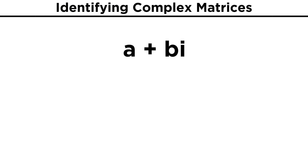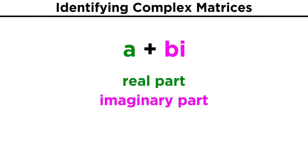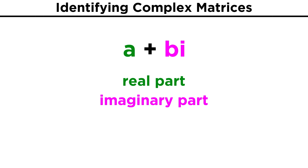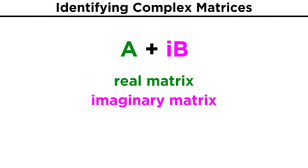We can simply recall that complex numbers are numbers with a real part A and an imaginary part BI, where I is the square root of negative one. Just the way we can separate complex numbers into a real component and an imaginary component, we can separate matrices into a real matrix A and an imaginary matrix IB.